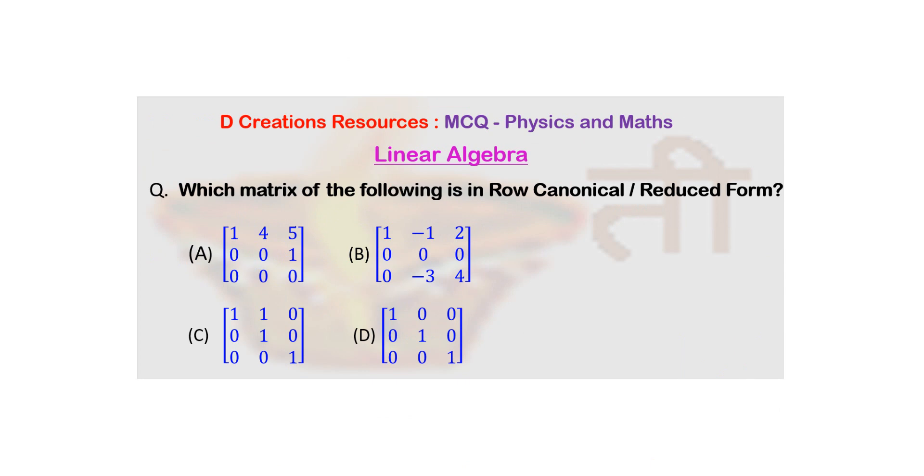When you look at option B, here itself you can see that this cannot be in row canonical form because the zero row is somewhere in between, it is not below. So option B is ruled out.